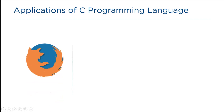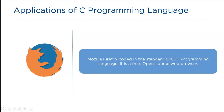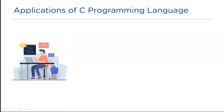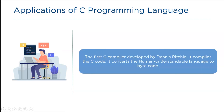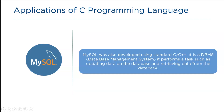Next, we have Mozilla Firefox. Mozilla Firefox is one of the free and open source web browsers coded using early standard versions of C. C language is also widely used in designing compilers and interpreters. A compiler translates the code from human understandable format to bytecode. The popular database MySQL was also developed using C. The simplicity of C enables MySQL to perform data manipulation tasks with ease.